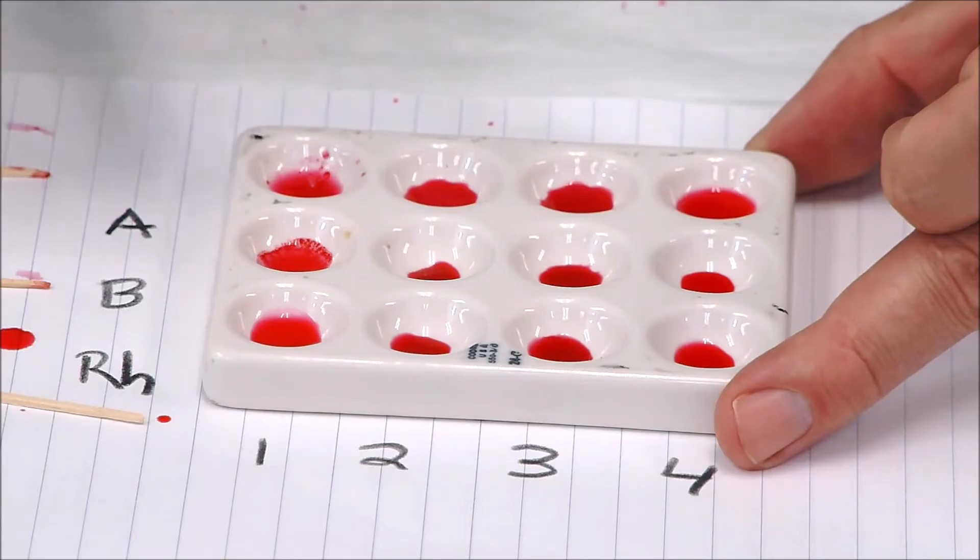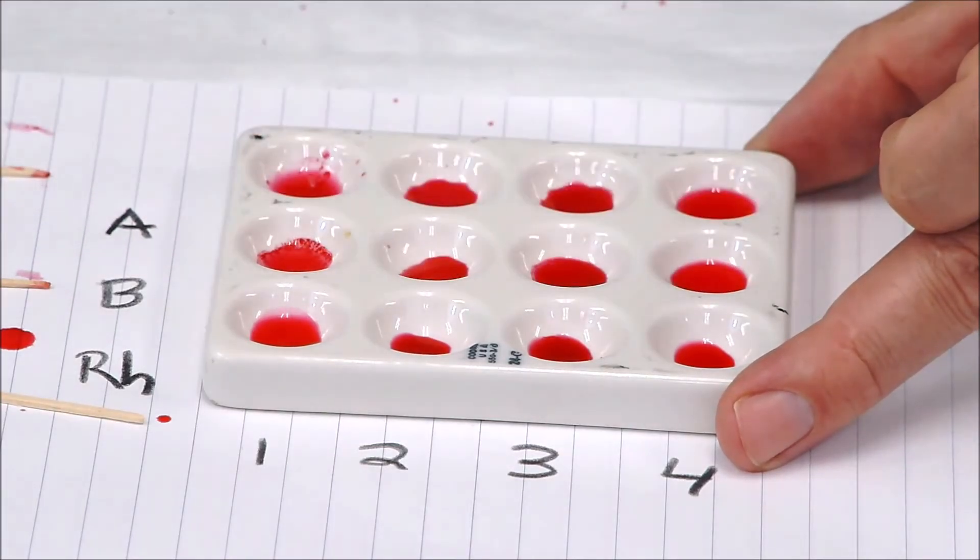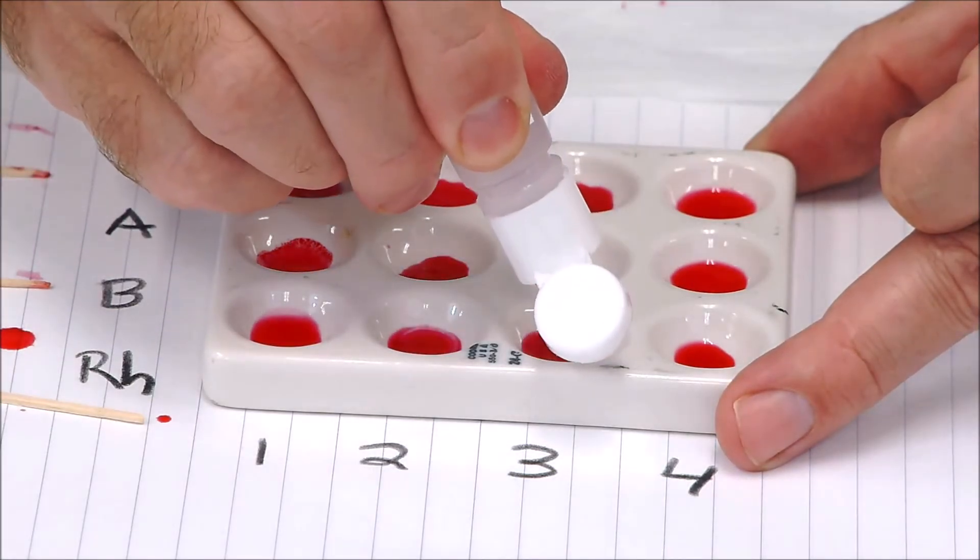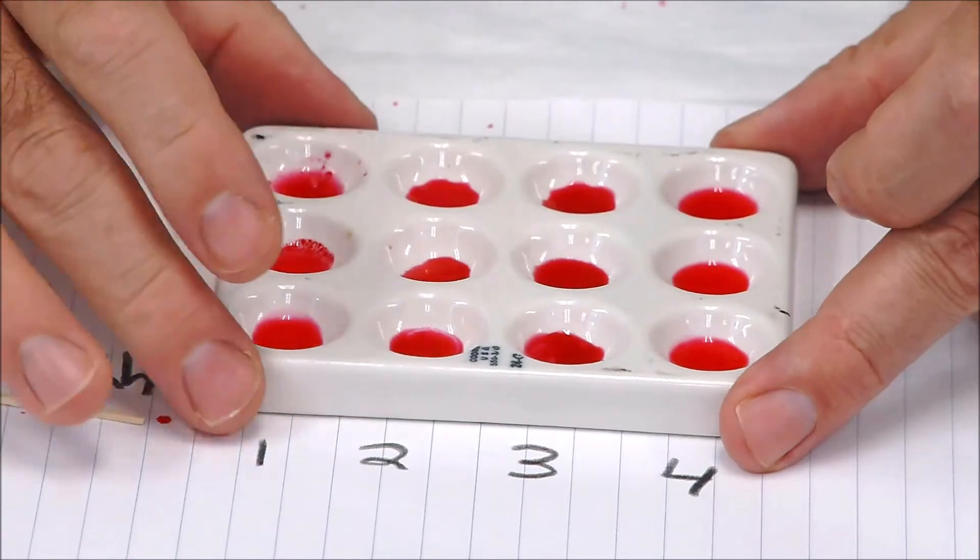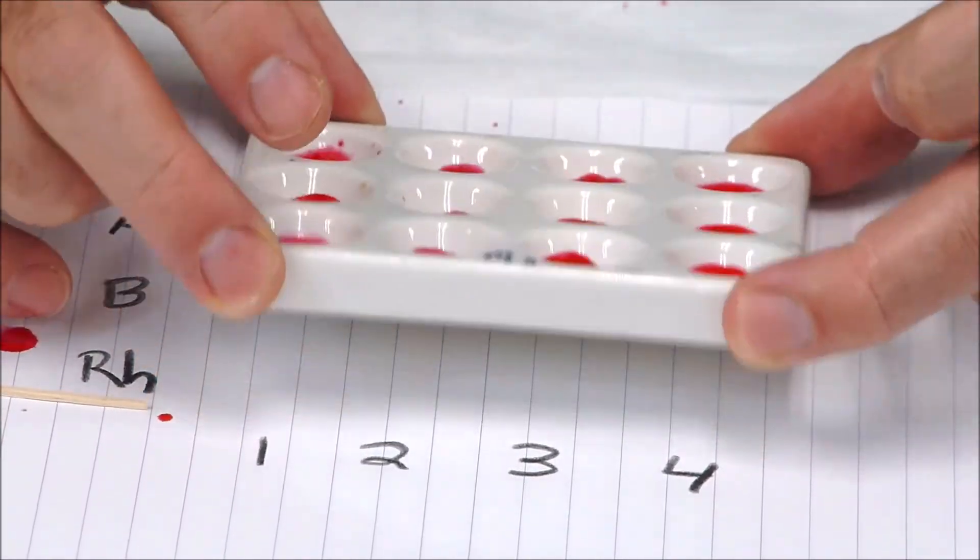And then finally the anti-D for the Rh. Okay, and again we're just going to agitate those as much as possible without getting any cross-contamination by going into adjacent wells.